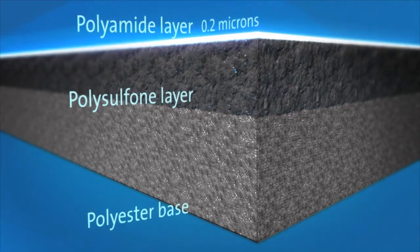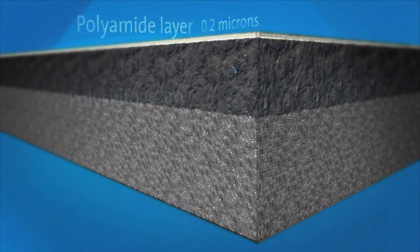The polysulfone layer strengthens the very thin barrier layer. It is the barrier layer that removes nutrients, chemicals, bacteria, and viruses from the water.